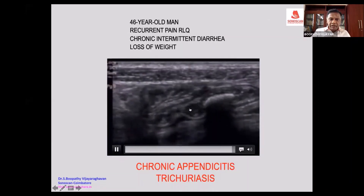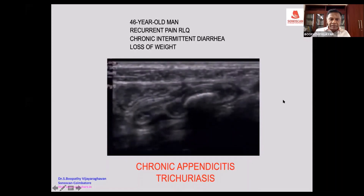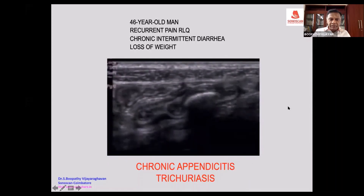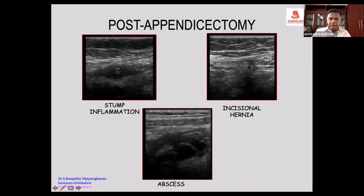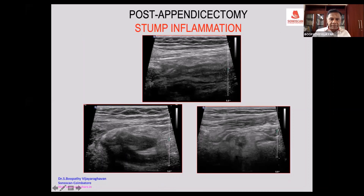You see movement in the lumen — this is due to worm movement. There is a slightly thick-walled cecum but a markedly thickened appendix that is retrocecal. On cough, there will be a bulge. There may also be an abscess in the right iliac fossa following appendicectomy.